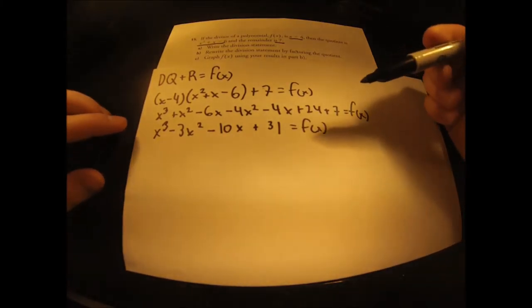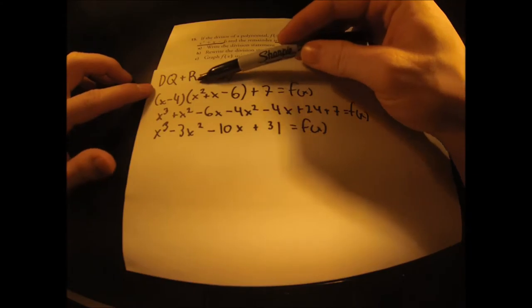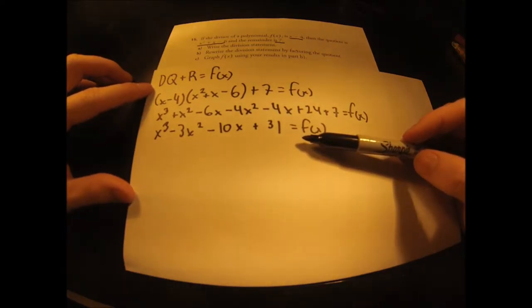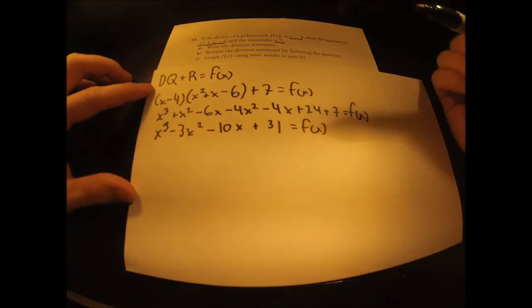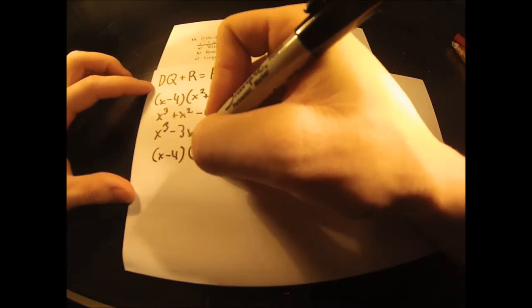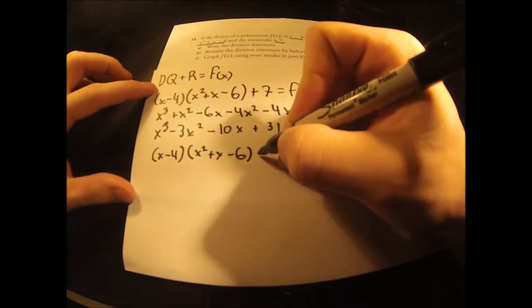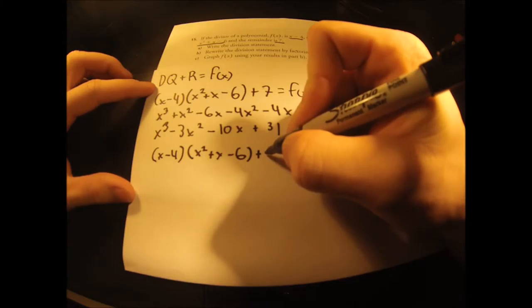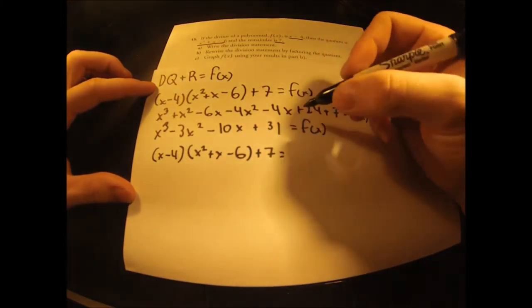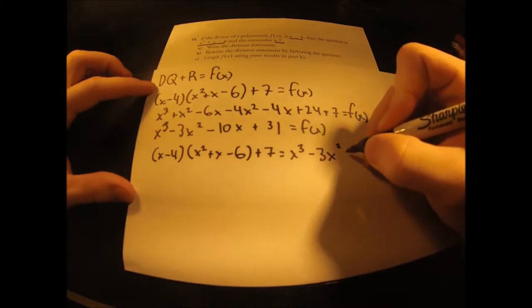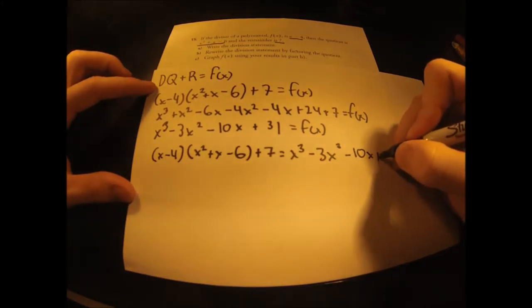For the final step, we are going to take this part of the division statement and our f(x) — our original equation — and write it all out together to create our full division statement. So we've got our divisor x minus 4, multiplied by our quotient x squared plus x minus 6, plus our remainder 7, and that equals f(x), which we solved as x cubed minus 3x squared minus 10x plus 31.